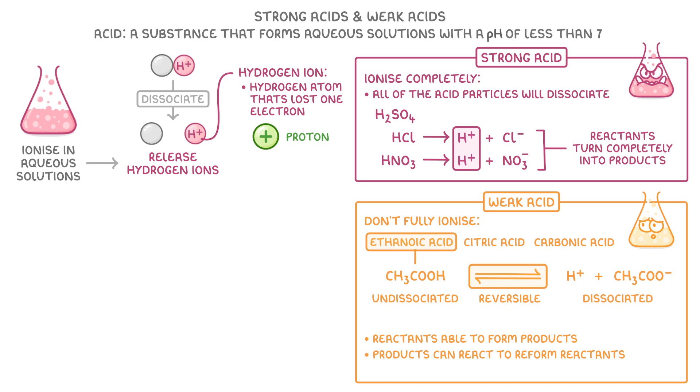Because only a few of the acid particles actually dissociate, we say that the equilibrium lies to the left, which just means that at equilibrium we'll have far more molecules of undissociated acid than we will molecules of dissociated acid.